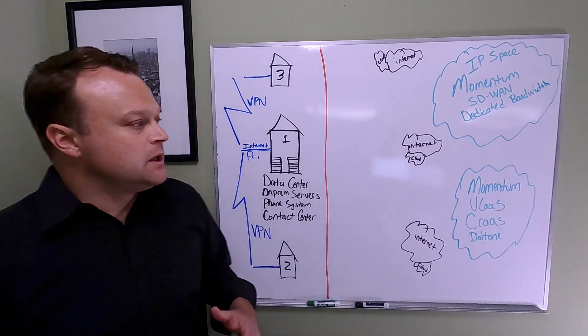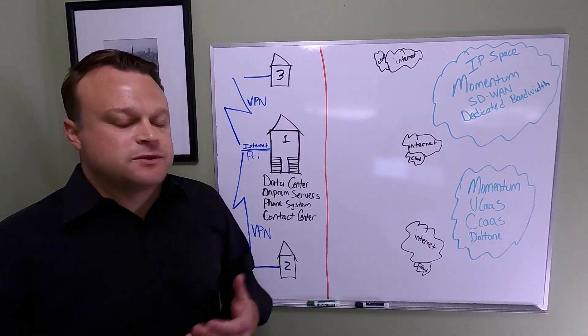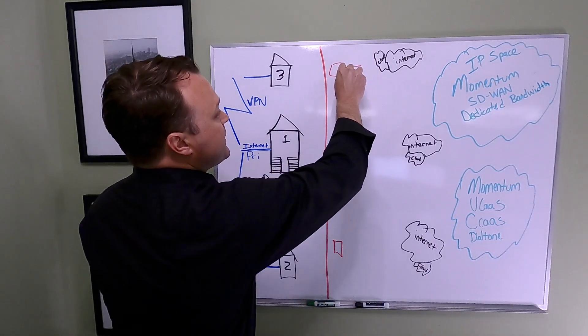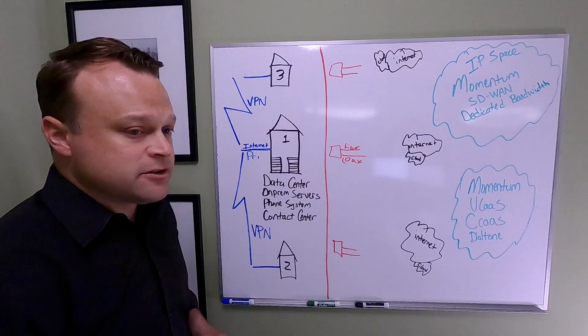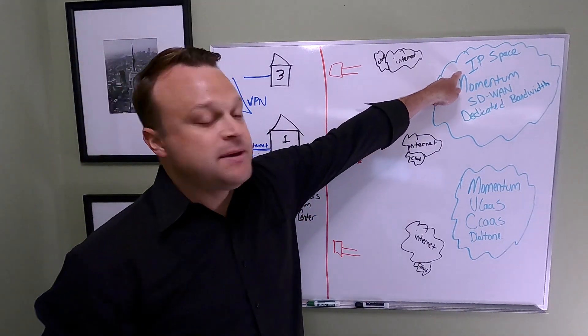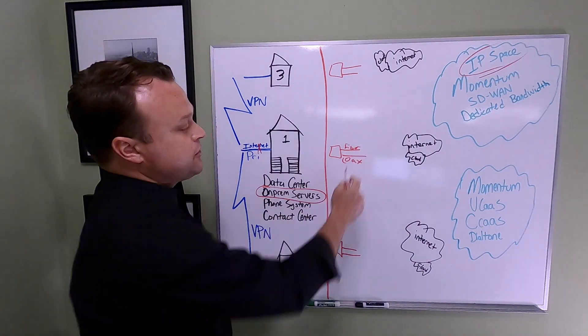I think it might be helpful for you to talk a little bit about our solutions with SD-WAN and UCaaS. A customer that we're probably all familiar with: single site with a data center, on-prem servers, a phone system, and a contact center with two remote locations all connecting via VPN.